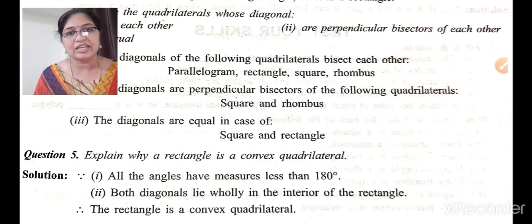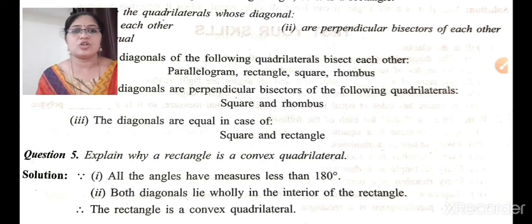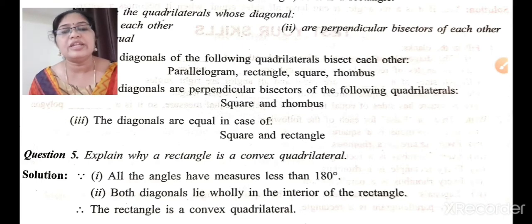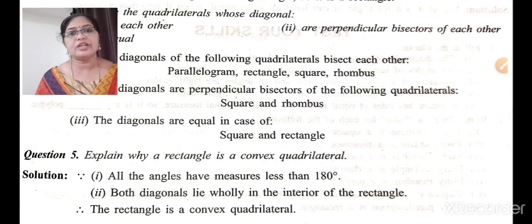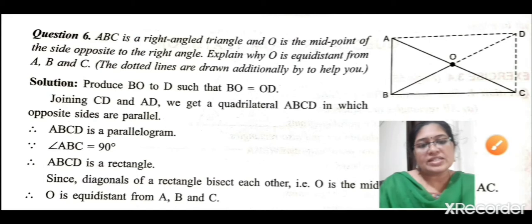For a rectangle, all angles are 90 degrees, which is less than 180 degrees — so that condition is satisfied. Both diagonals meet at the interior of the rectangle. Therefore, all angles have measures less than 180 degrees and both diagonals lie wholly in the interior — so a rectangle is a convex quadrilateral.